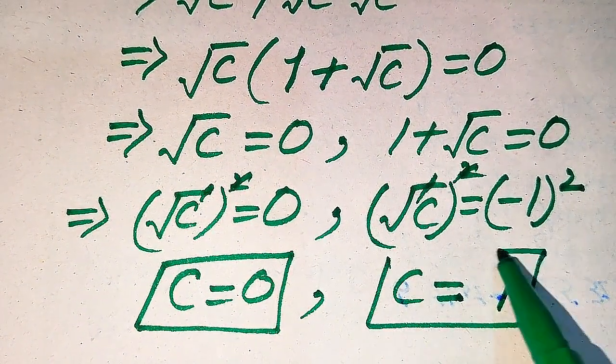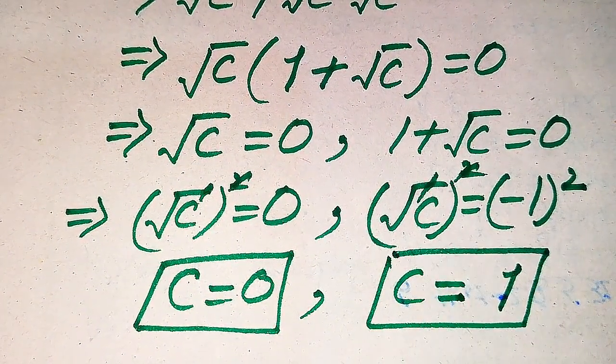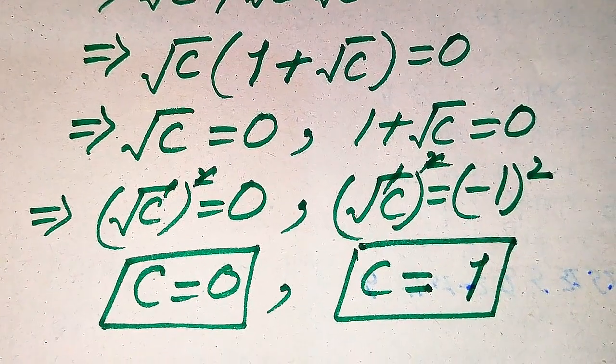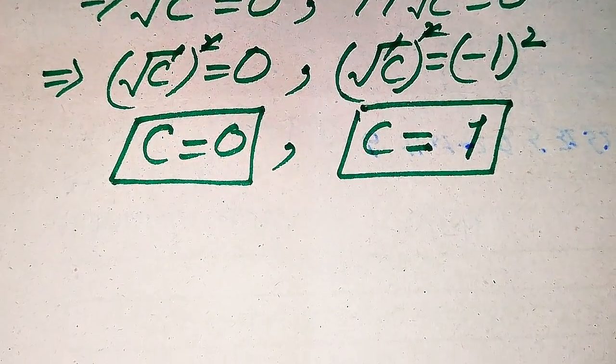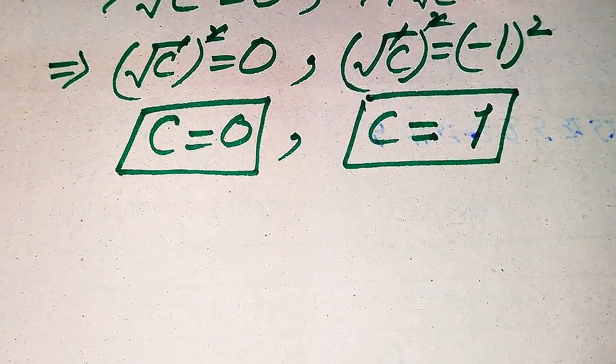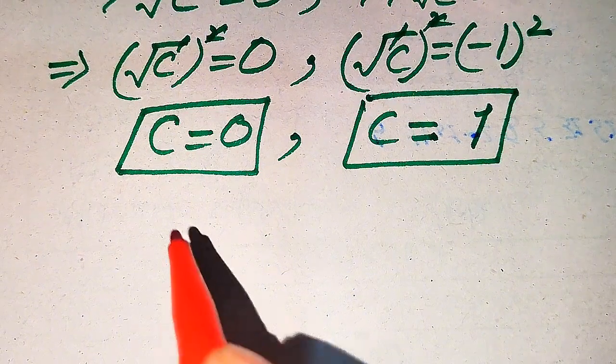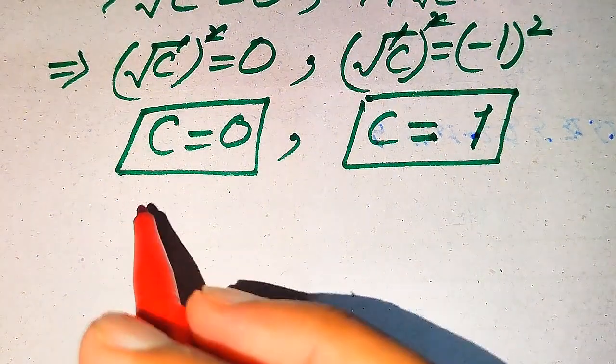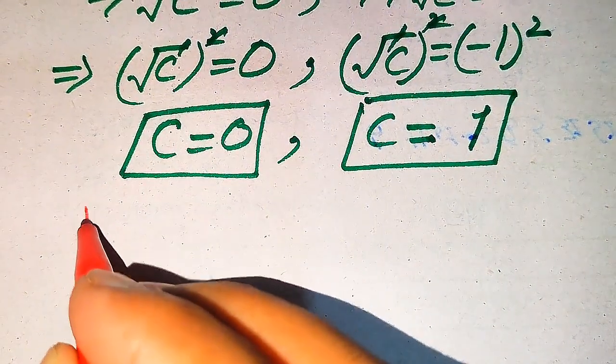So in the first method we get two roots: C equals 0 and C equals 1. Now in the next steps we need to verify which of the roots are solutions and which are extraneous roots.